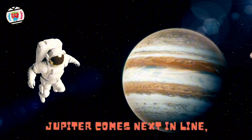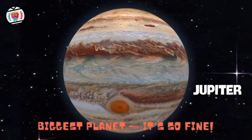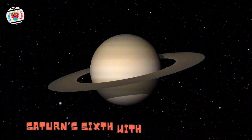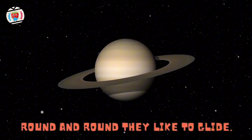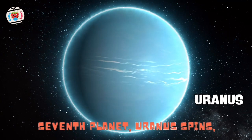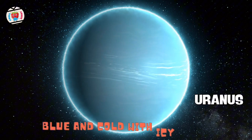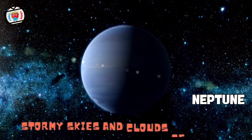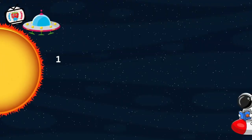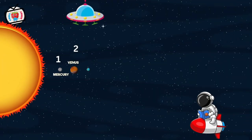Jupiter comes next in line, biggest planet, it's so fine. Saturn's sixth with rings so wide, round and round they like to glide. Seventh planet Uranus spins, blue and cold with icy winds. Neptune's last so far away, stormy skies and clouds of gray.